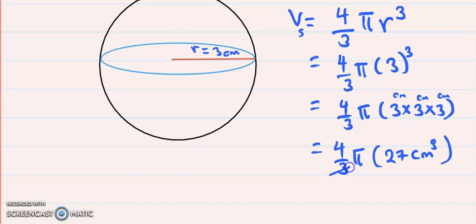Now we can simplify: 3 goes into 3 once, and 3 goes into 9 three times. This will give me 4 times π times 9 cm³.